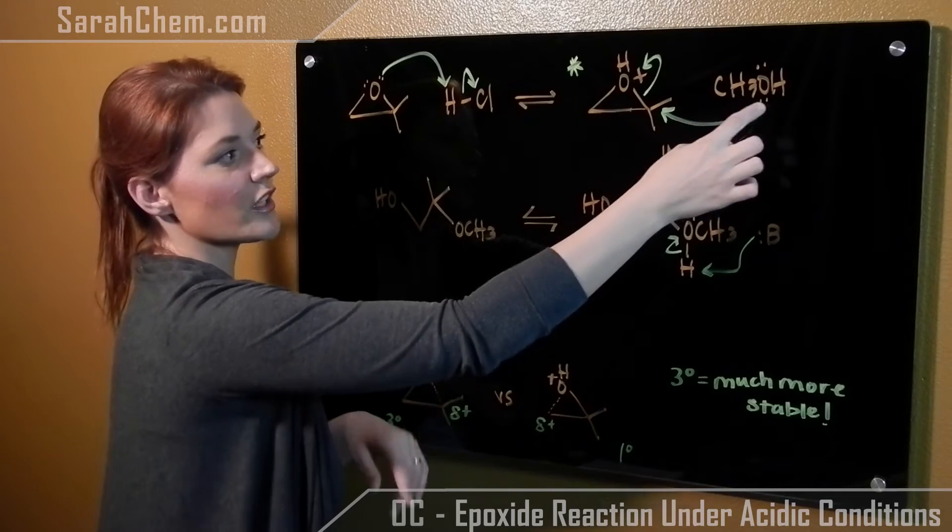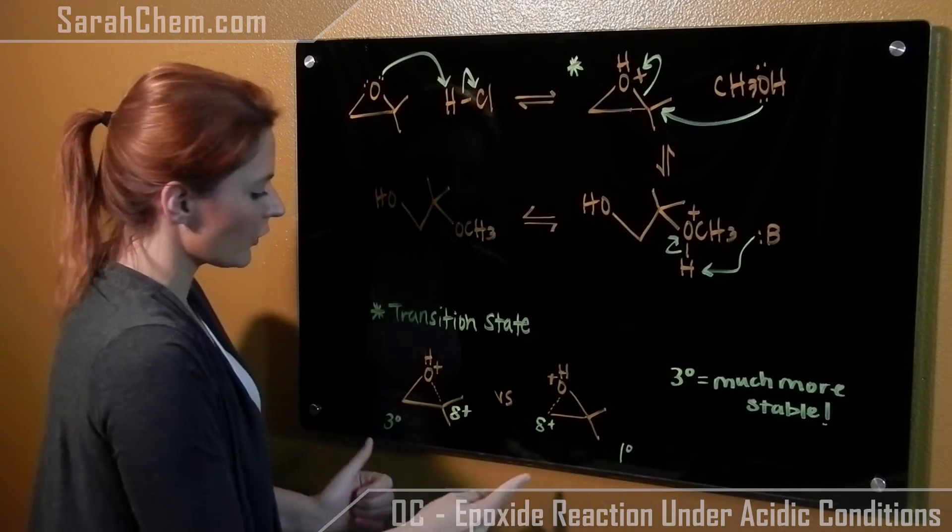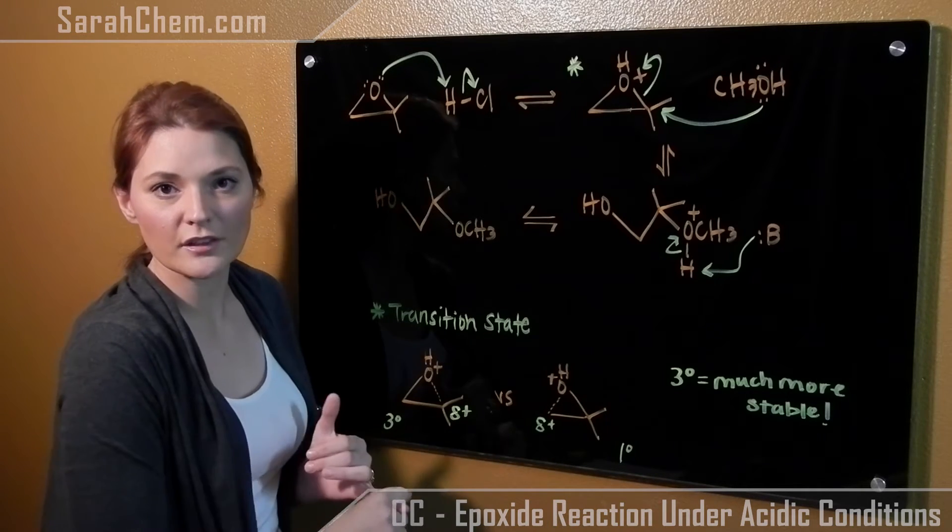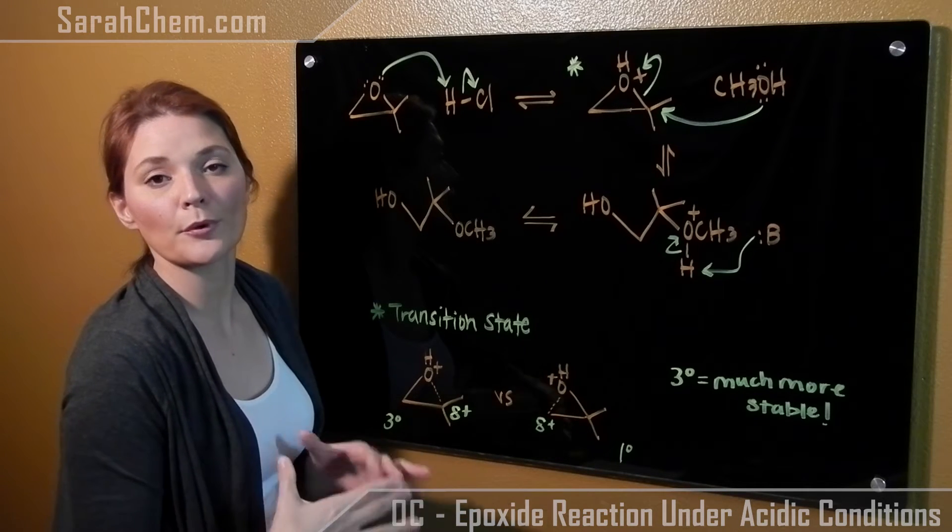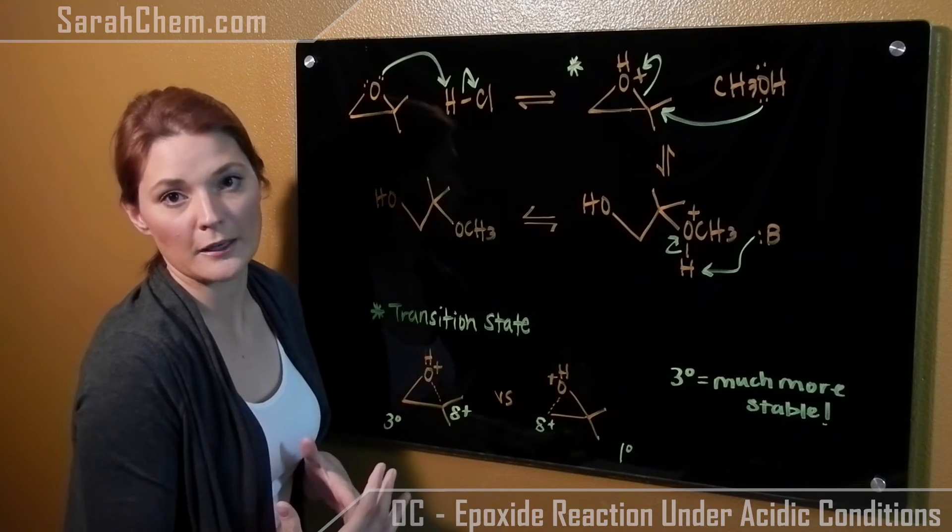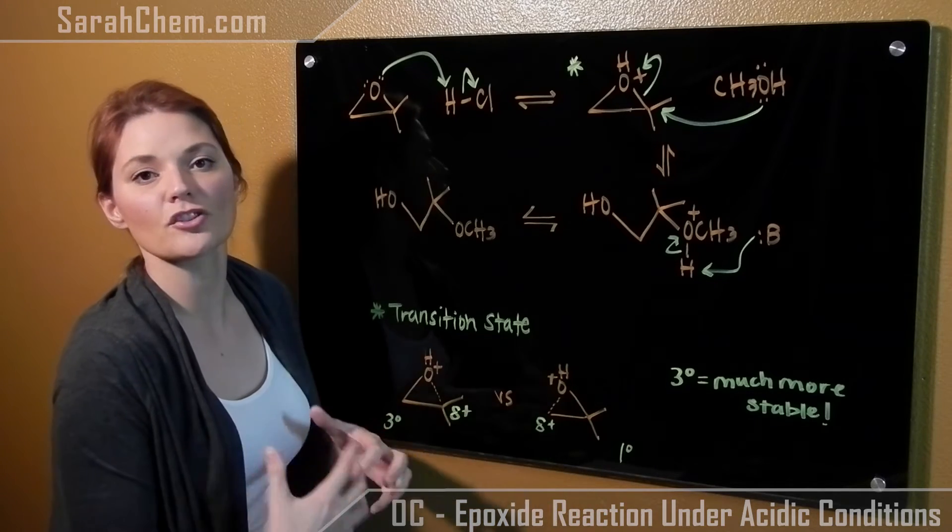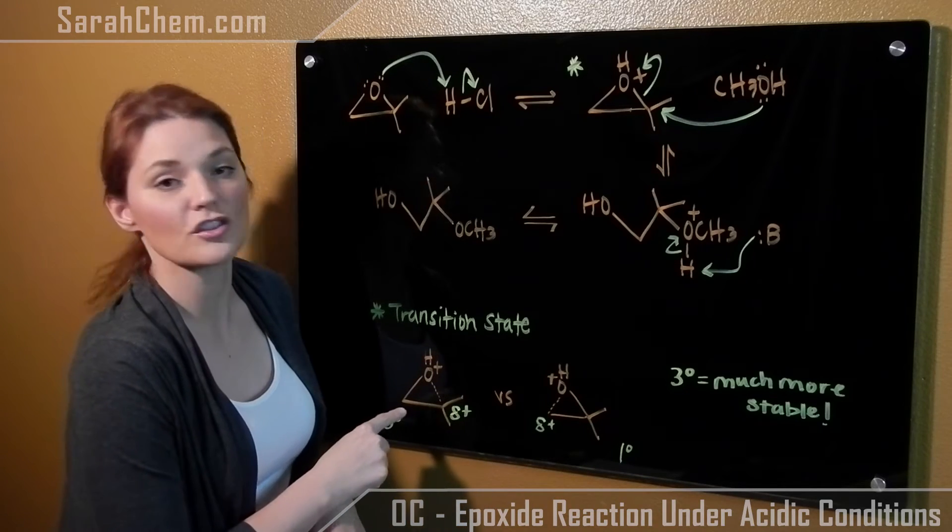Now to understand why this methanol group is coming and attacking this carbon, let's take a look at the transition state. Over here on the transition state, because oxygen is positively charged based on Lewis dot formal charges and because it's in a three-membered ring, it's experiencing a lot of strain. So what it's going to do to ease up that strain is to have one of its bonds partially break.